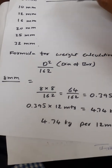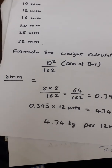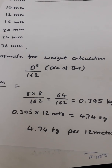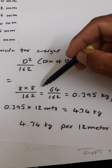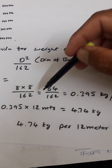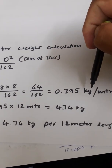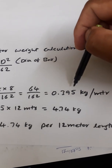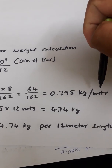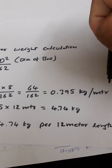Let us try some examples. For an 8mm bar, the calculation is D squared divided by 162, so 8 × 8 divided by 162, which gives us 0.395 kg. This is the weight per 1 meter — it is only for 1 meter, not the entire bar length.